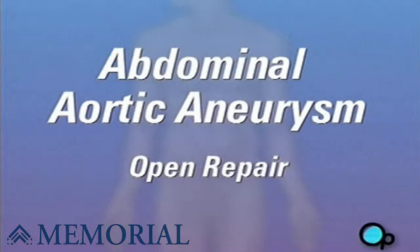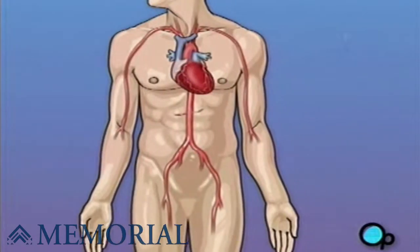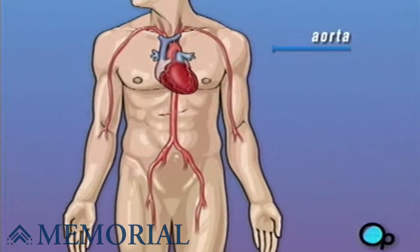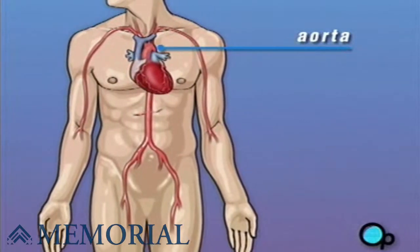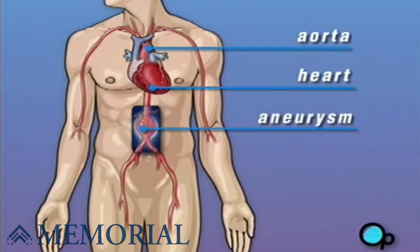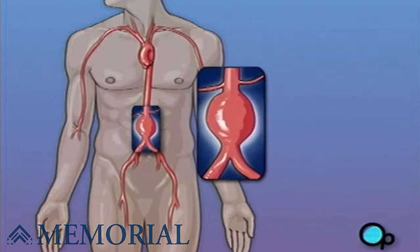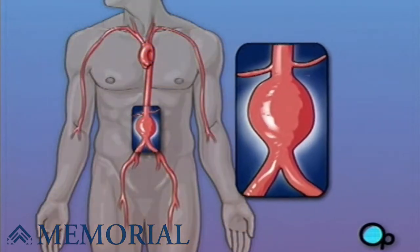Your doctor has recommended that you have surgery to treat an abdominal aortic aneurysm, but what does that actually mean? The aorta is the main blood vessel that carries oxygen-rich blood from your heart to the organs in your body. An aneurysm is a bulge or swelling in a blood vessel. This type of bulge occurs when a blood clot develops in the aorta, causing it to expand.